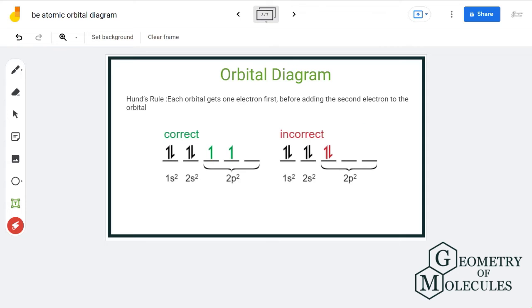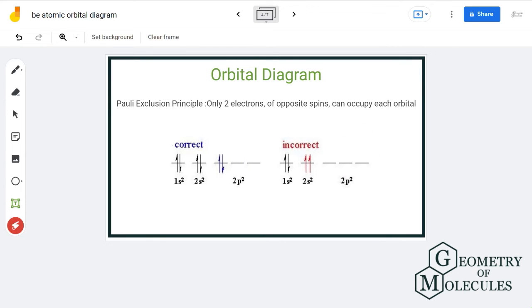The third and last rule is Pauli's exclusion principle that states the arrangement of two electrons in any orbital. It states that there can be a maximum of two electrons in an orbital, and that too should have opposite spin. No two electrons with same spin can occupy a single orbital as shown here. That is incorrect.